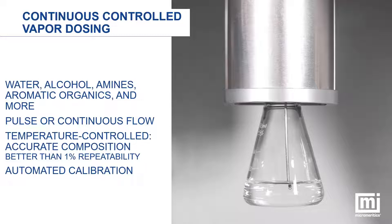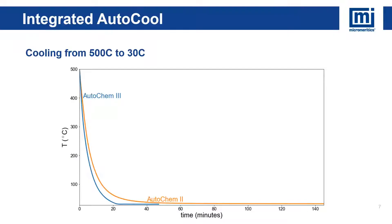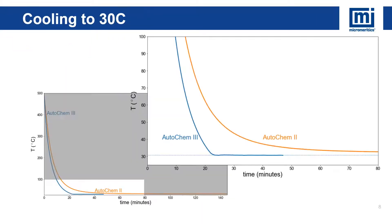The temperature control system allows vapor injection repeatability to be better than one percent. Both pulse and continuous flow vapor calibrations are fully automated. The new integrated AutoCool system reduces analysis time by rapidly reaching target temperatures during cool-down steps. The AutoChem 3 requires less than a third of the time its predecessor does to cool down from 500 to 30 degrees Celsius.